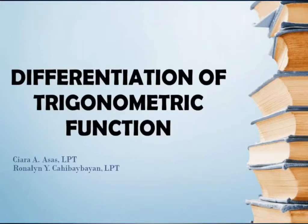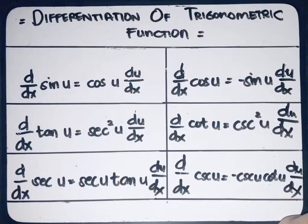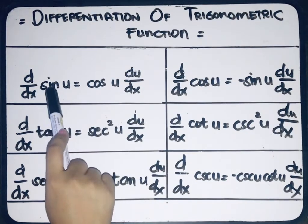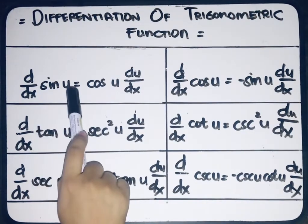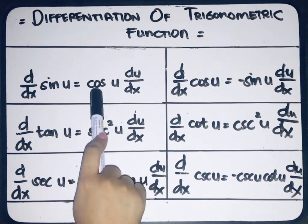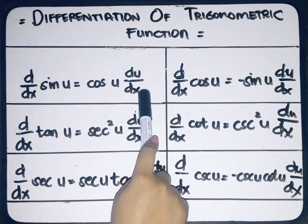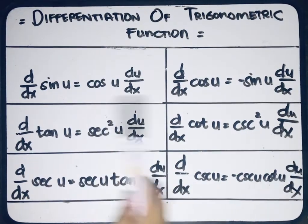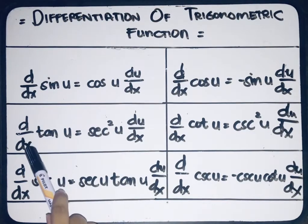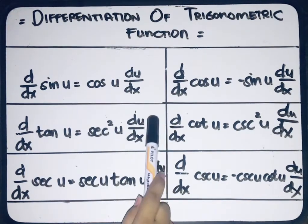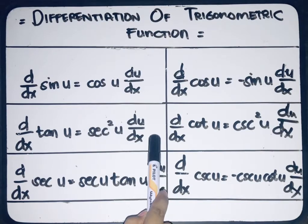Hi guys. Our topic for today is all about the differentiation of trigonometric functions, wherein the derivative of sine u with respect to x is equal to cosine u multiplied to the derivative of u with respect to x. The derivative of tangent u with respect to x is equal to secant squared u multiplied to the derivative of u with respect to x.